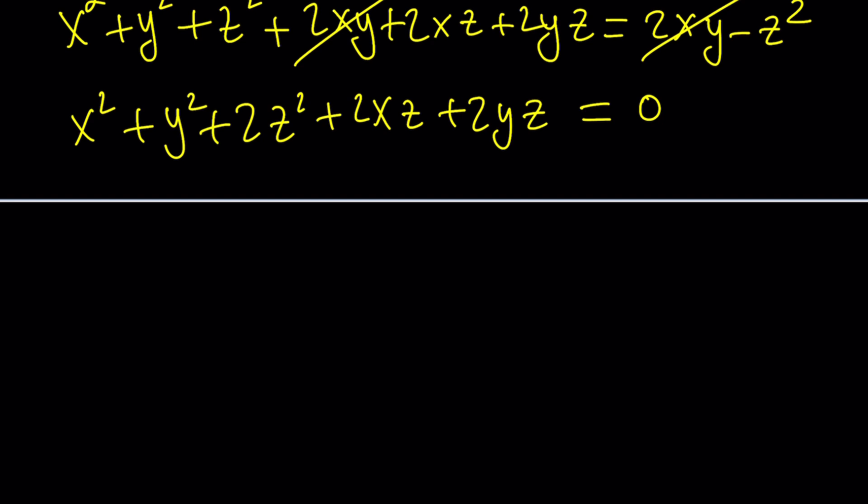Now, we have x squared and 2xz. I'm going to take one of these z squared. So I'll take z squared. I still have one z squared left. And then I will continue with y squared and then 2yz. And now I'm going to add the other z squared. And boom. We got it.